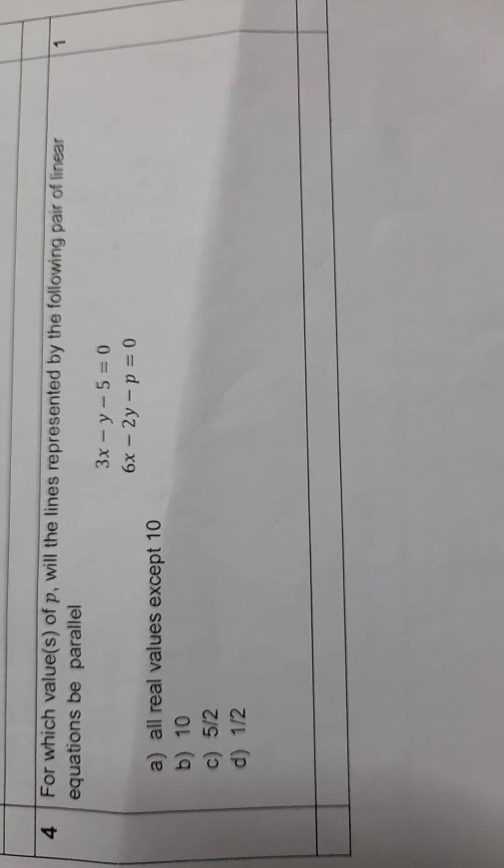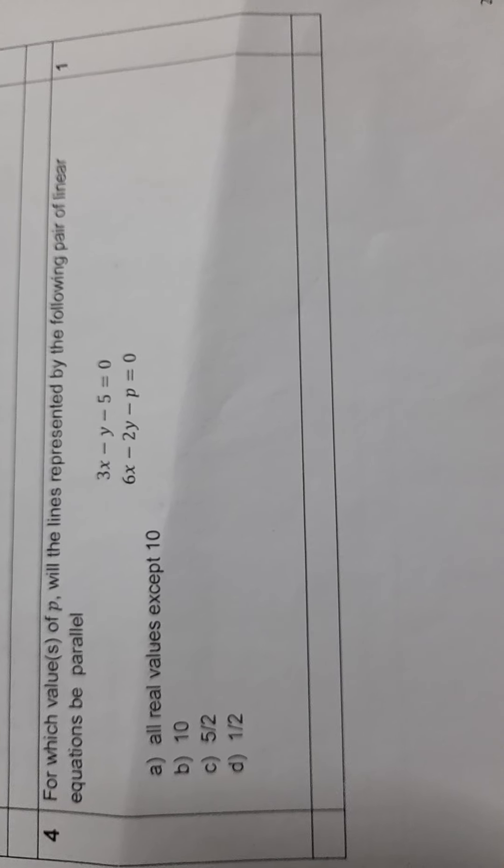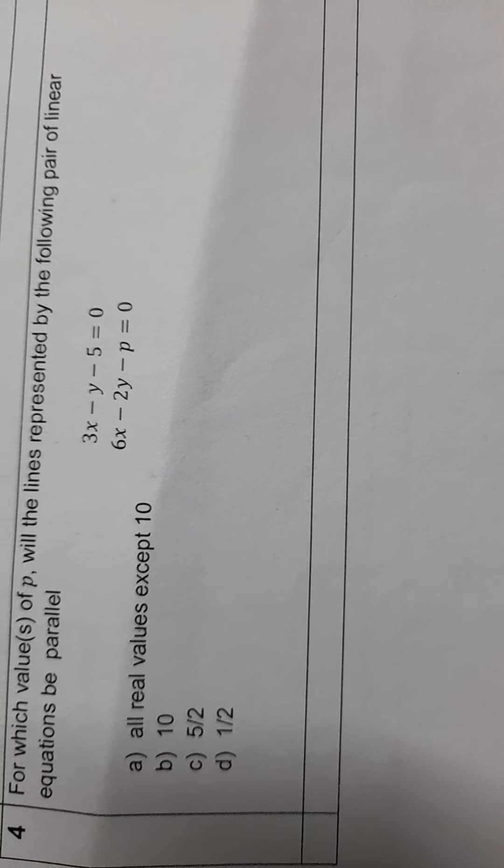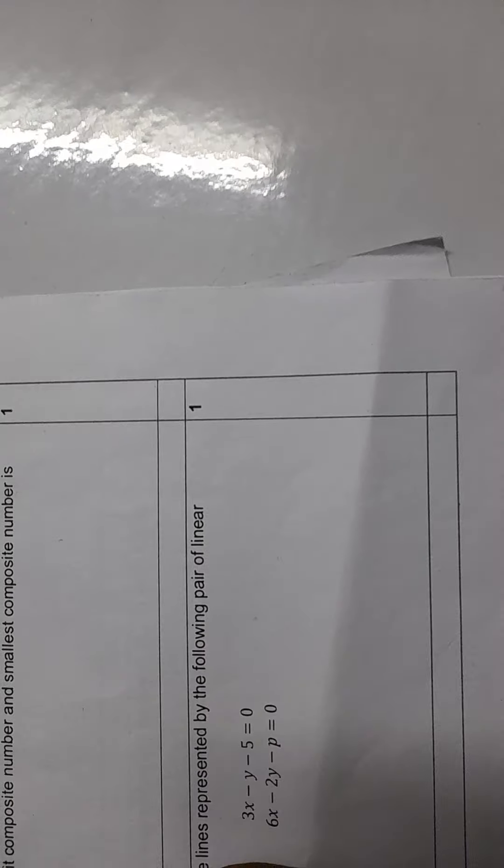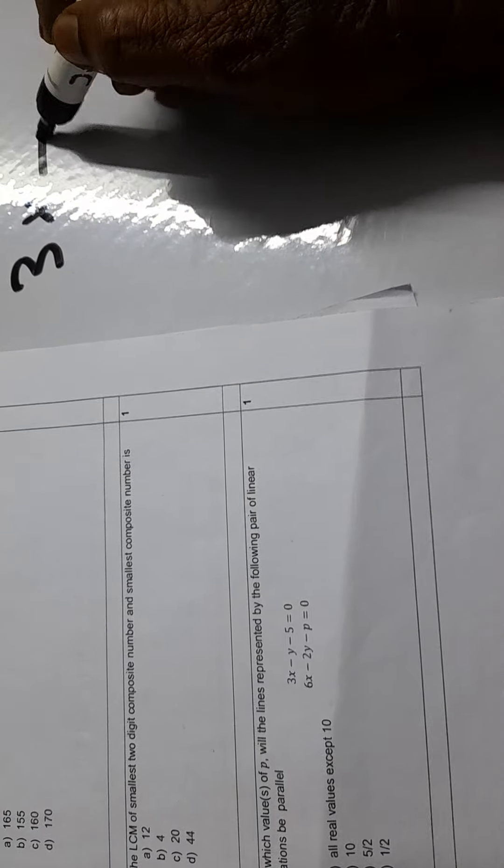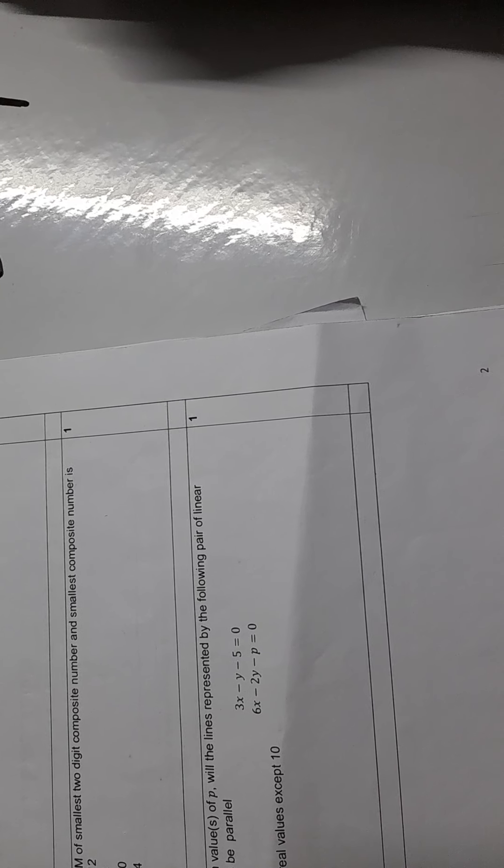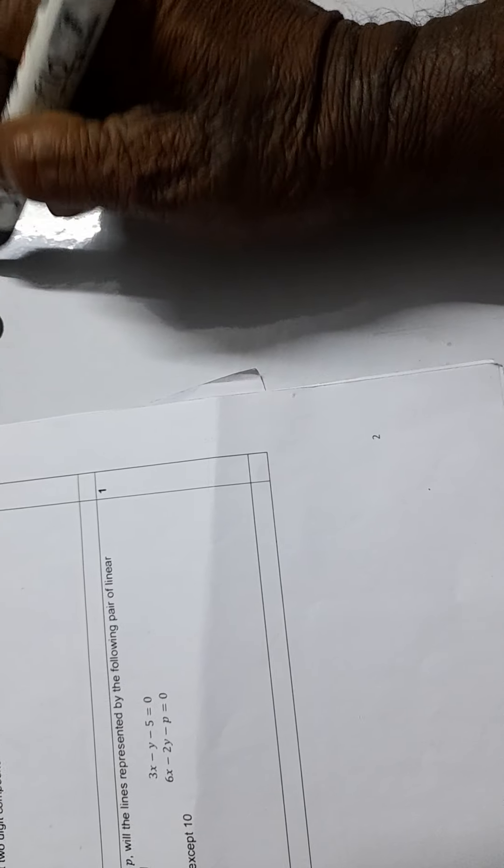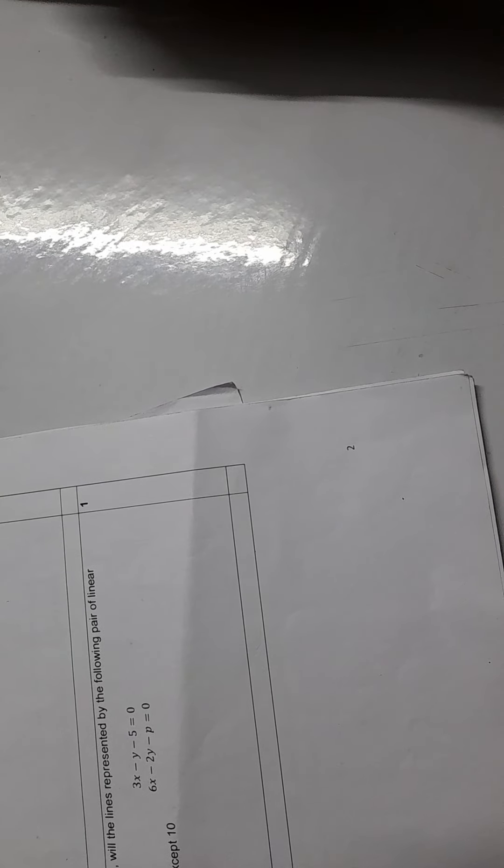Here the question is, for which values of P will the lines represented by the following pair of linear equations be parallel? The linear equations are 3x minus y minus 5 equals 0 and 6x minus 2y minus p equals 0.